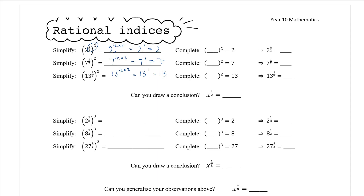Now let's think about the second column separately. If I know that something squared equals two, the only way I can square something and get two is if it is the square root of two. Something squared gives me seven means it must be root seven squared, which gives me seven. Similarly, something squared gives me thirteen means root thirteen squared is thirteen. So we know that two to the power of a half when squared gives us two, and square root of two when squared also gives us two — so two to the power of a half and the square root of two must be the same thing. Similarly, seven to the power of a half must equal the square root of seven, and the same logic follows with thirteen.